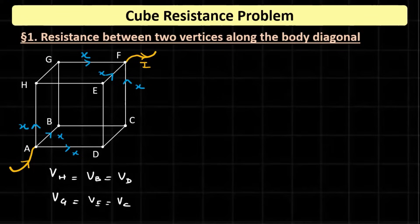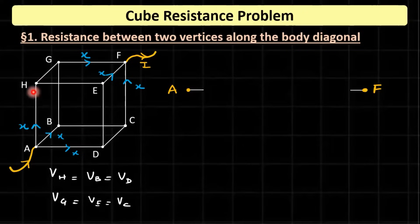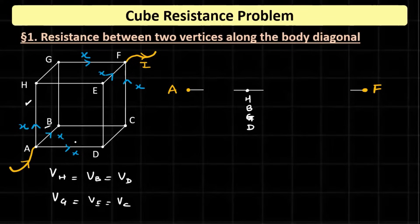Now we can find the equivalent resistance easily. We have to find the resistance between A and F. Since H, B, and D are at the same potential, we merge them into one node. Between that merged node (H, B, D) and A, there are three resistors in parallel, giving R/3. Between G, E, C and F, there are similarly three resistors in parallel, also giving R/3.